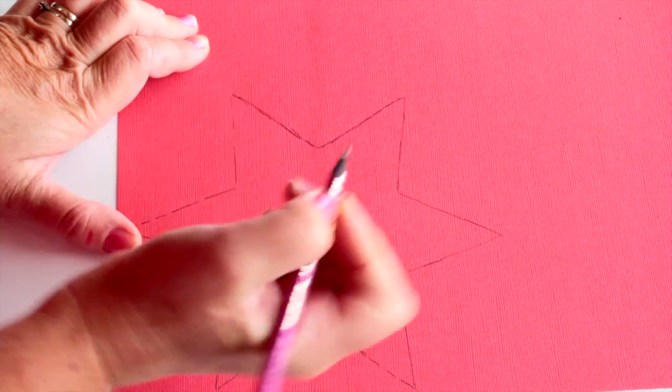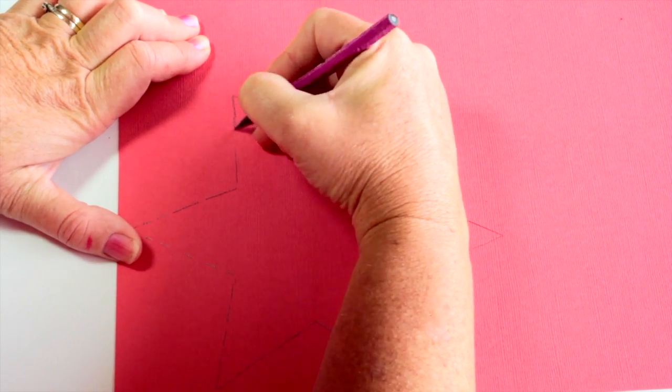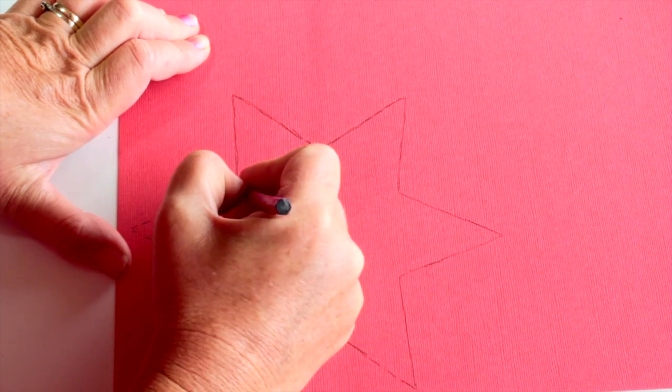Draw a star on the dark pink cardboard. You can download the template from my blog. The link is below the video.